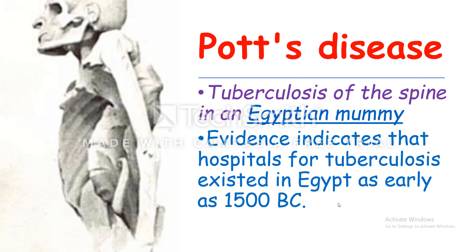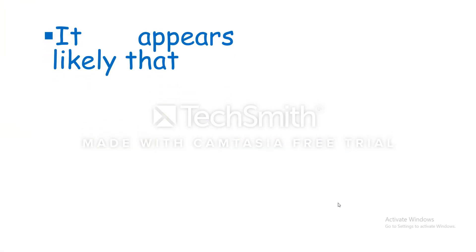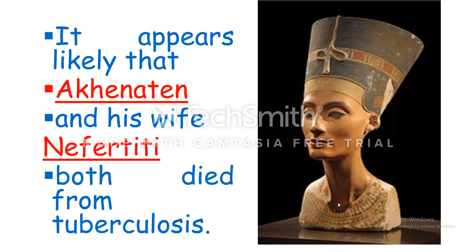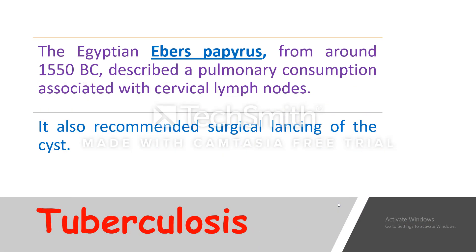Evidence indicates that hospitals for tuberculosis existed in Egypt as early as 1,500 BC. It appears likely that Akhenaton and his wife Nefertiti both died from tuberculosis. The Egyptian Ebers Papyrus around 1,500 BC described pulmonary consumption associated with cervical lymph nodes and also recommended surgical lancing of the cyst.